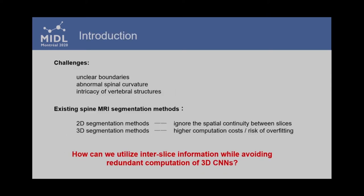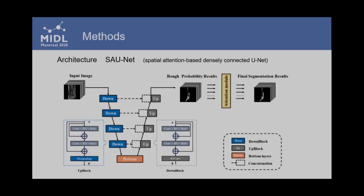Spinal segmentation is still considered a difficult task due to many challenges. We proposed a novel structure called SAUnet. Firstly, we redesigned the structure of the classic U-Net by appending dense connections to its contracting layers.